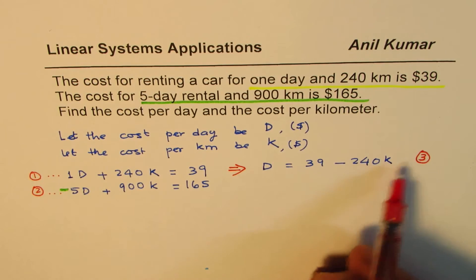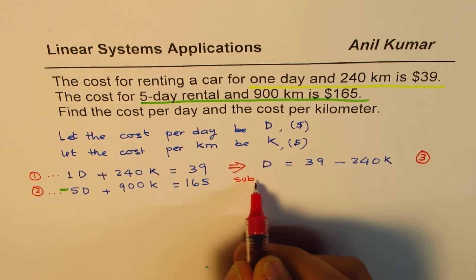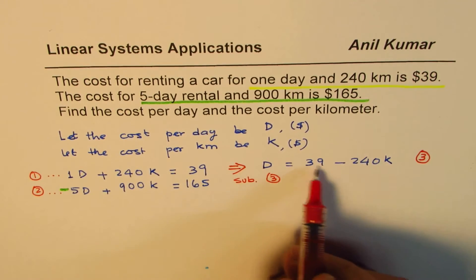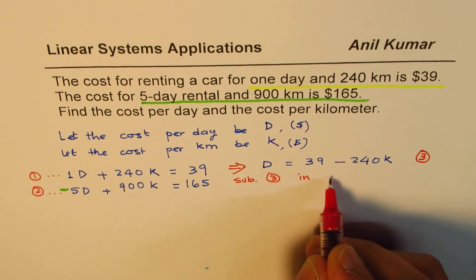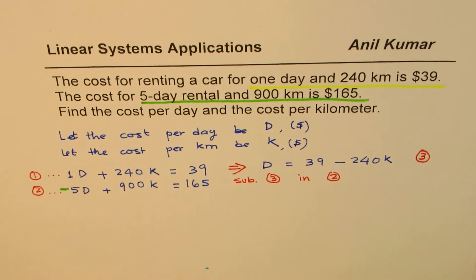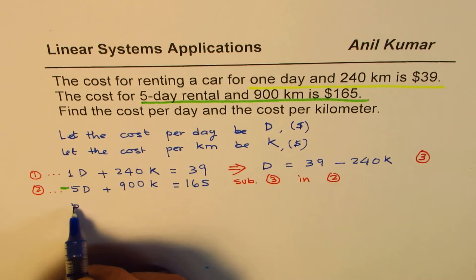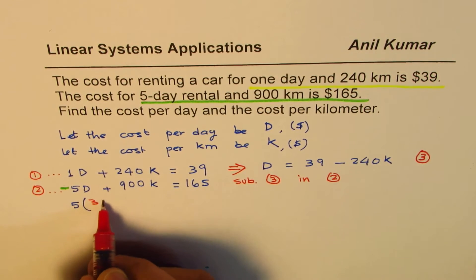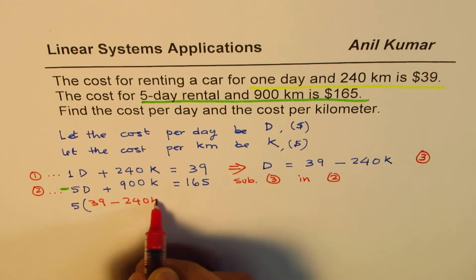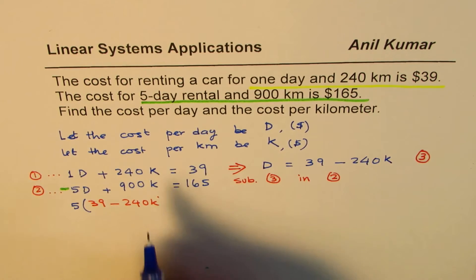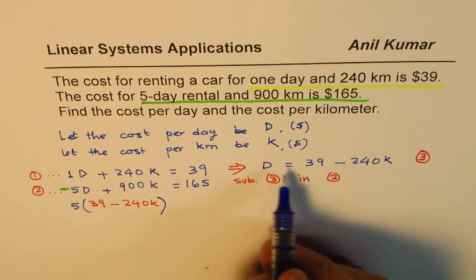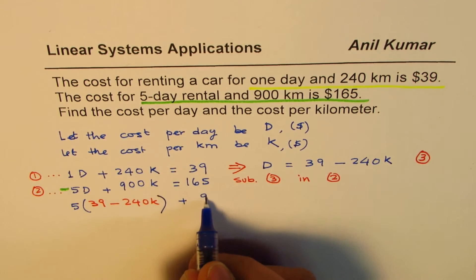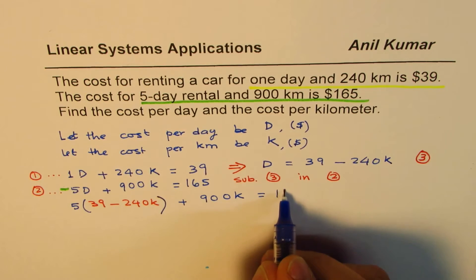Now, see what happens if I substitute three in two. When I say sub three, the variable D, which is in terms of K, in equation two. Let me show you how. We have five here, and then within brackets, I'll substitute what D is. D is 39 minus 240K. That is what I mean to say. When I say substitute three in two, this is what. So five times 39 minus 240K plus 900K equals to 165.